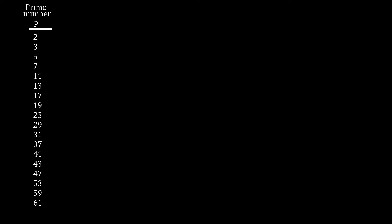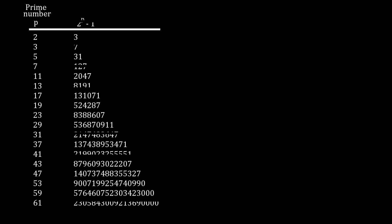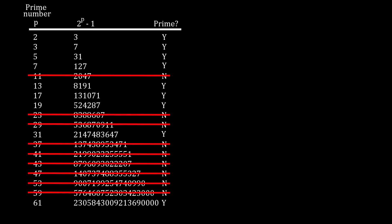Here are the first 18 prime numbers. And here's what we get when we put these numbers into the first part of Euclid's formula. Only some of the new numbers are prime. And this is the key.